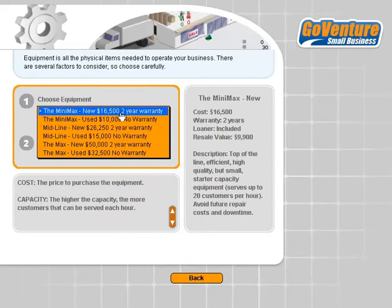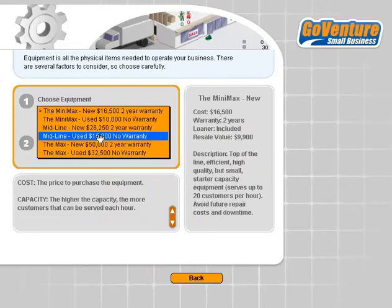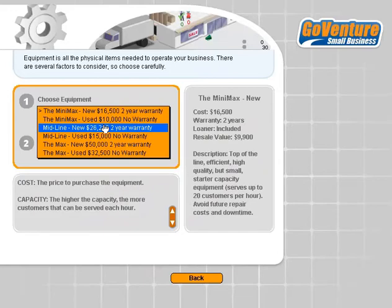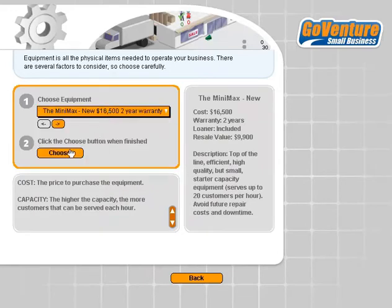Equipment is what you need to operate your business. For a sandwich business, I need refrigeration, ovens, toasters, and so on. We can choose different types of equipment — some are under warranty and some are not. Warranty means if it breaks down, it will be replaced at no cost. Without warranty, if it breaks down, you pay the repair or replacement cost. So you're taking a bit of risk without warranty, but you're also saving money at the beginning.